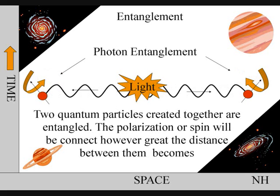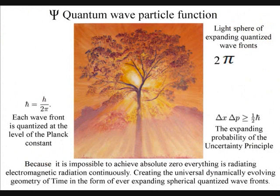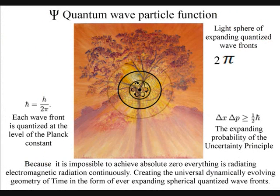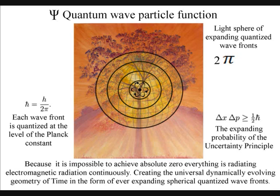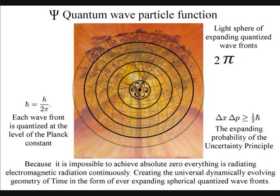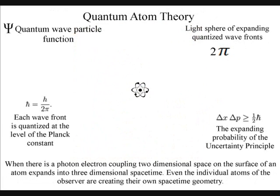In a new theory called quantum atom theory, this problem can be explained. Light has symmetry and geometry that forms Einstein's curvature of space-time, creating quantum entanglement.